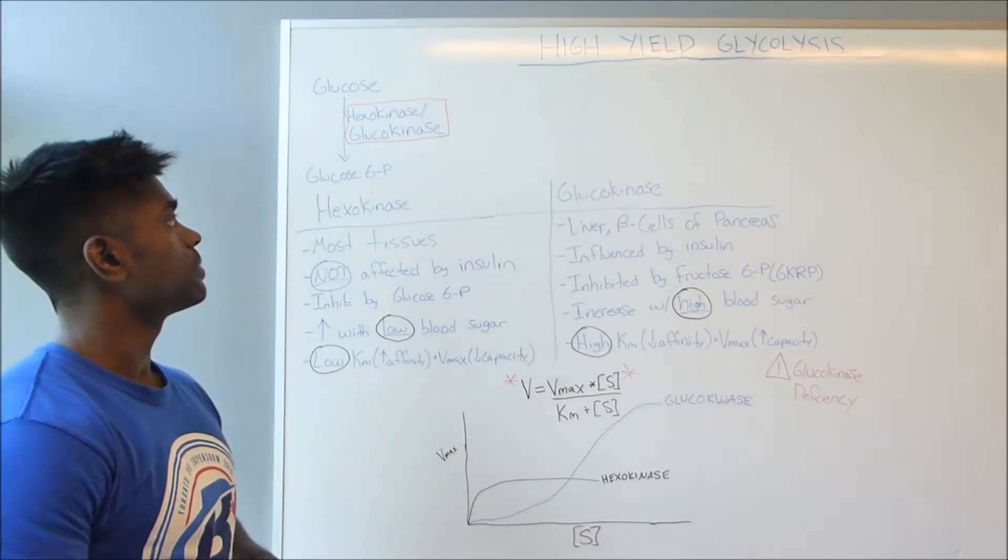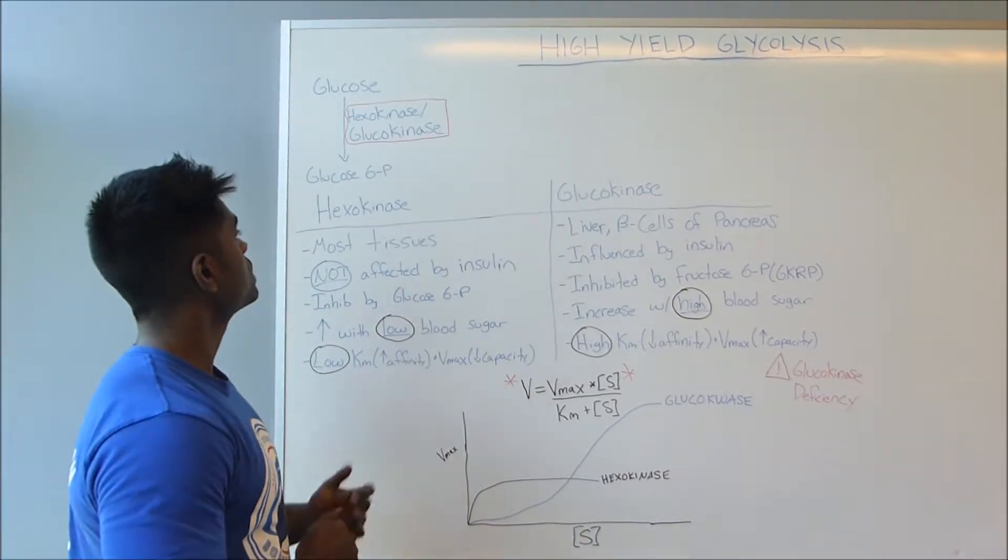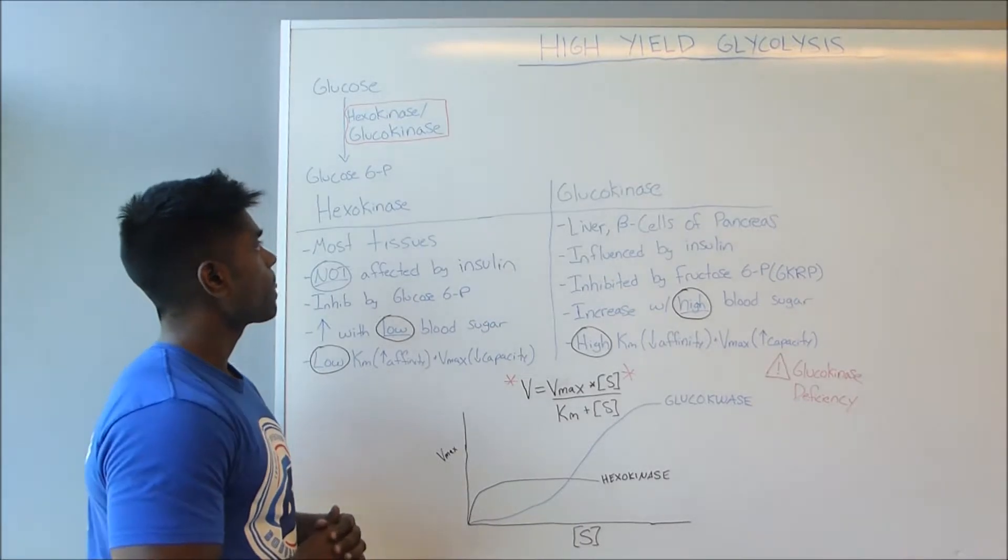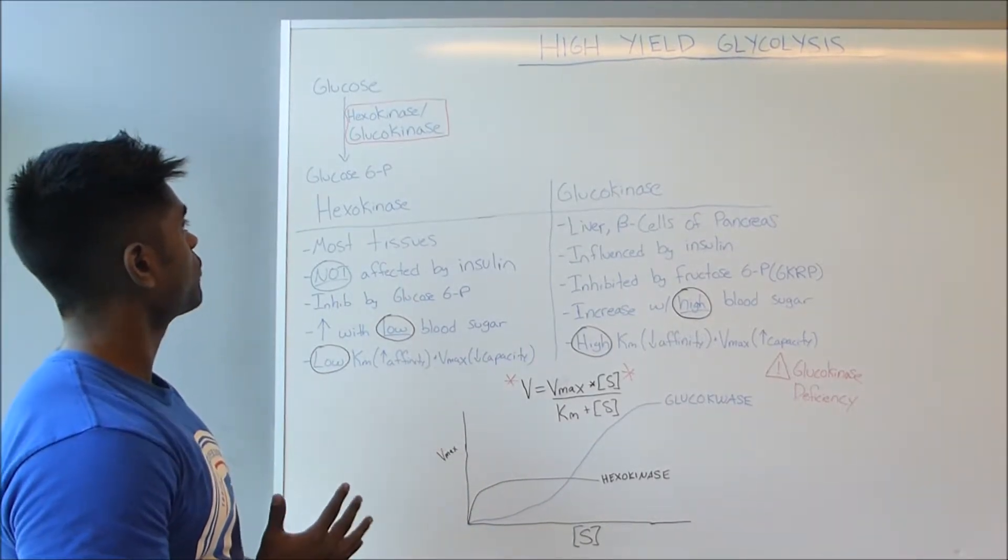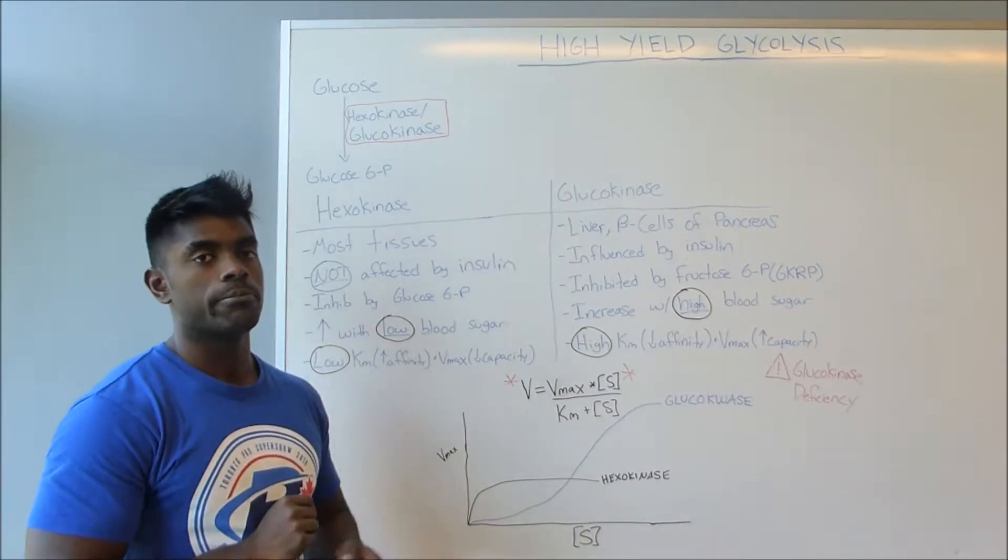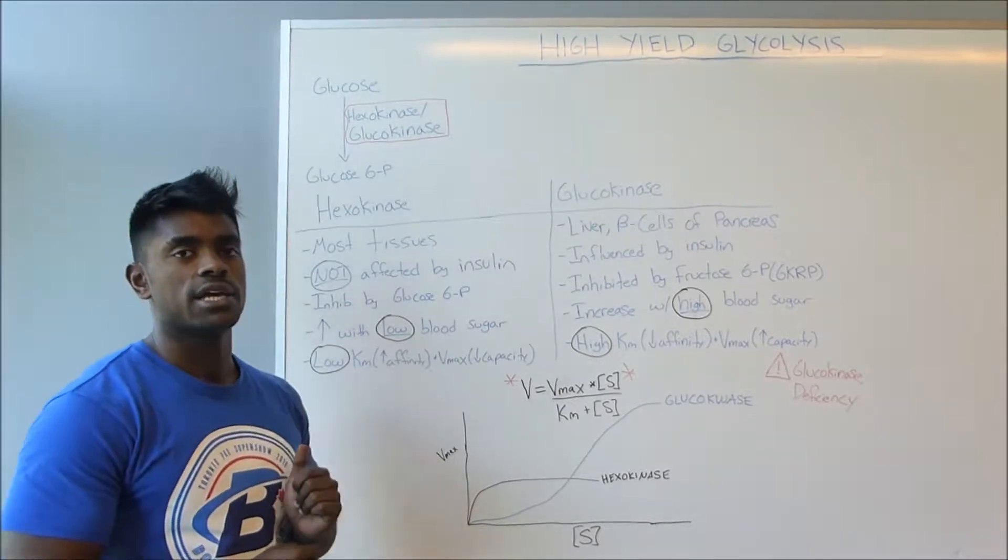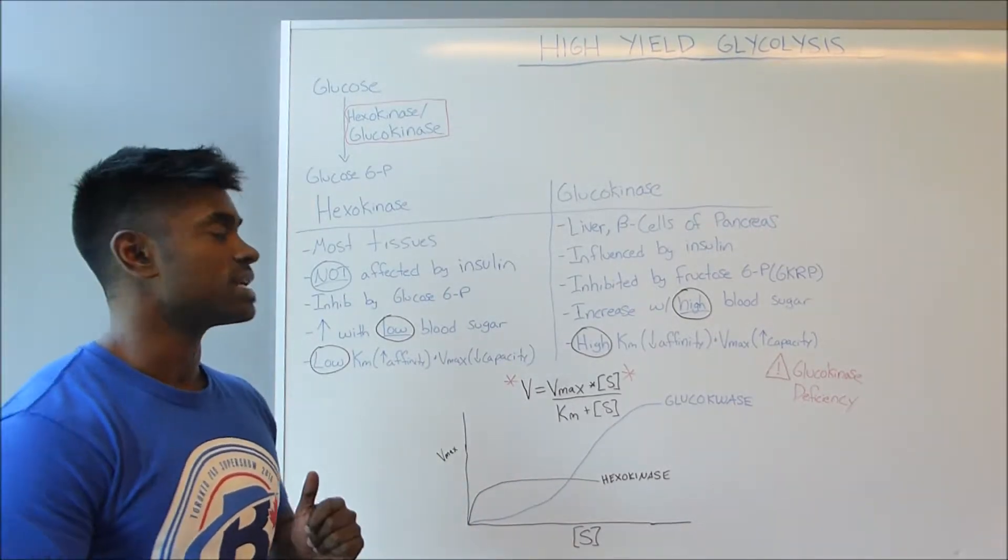Now the first enzyme that we're going to be talking about is hexokinase and glucokinase. So what is the difference between these two enzymes? Well, these enzymes are actually located in different parts of the body, and based on their locations we can figure out the characteristics surrounding each of the enzymes because they do vary quite significantly.